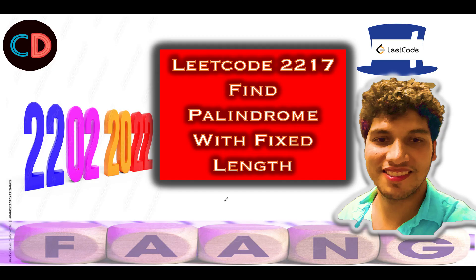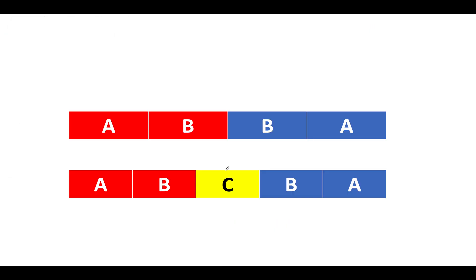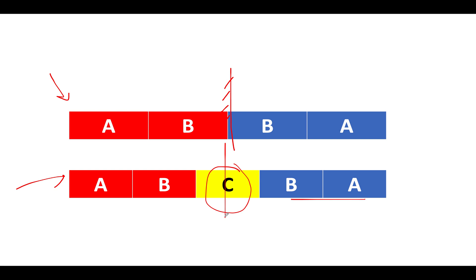LeetCode 2217 - Find Palindrome with Fixed Length is a pattern identification question. If you can identify the pattern, you can come up with the approach. I've depicted two strings: one of even length and one of odd length. A palindromic string is split at the middle point — for even length you have AB followed by BA, and for odd length you have A B C B A, where C is the middle element and the string is a mirrored image at the middle point.